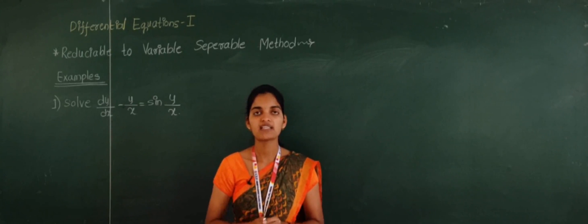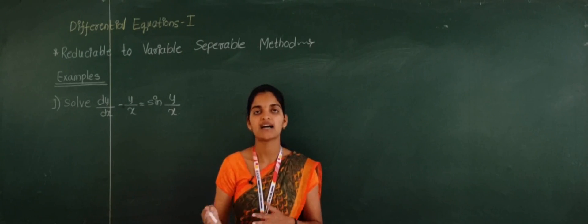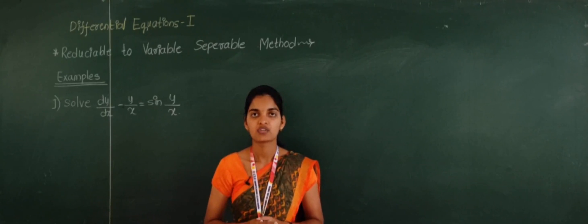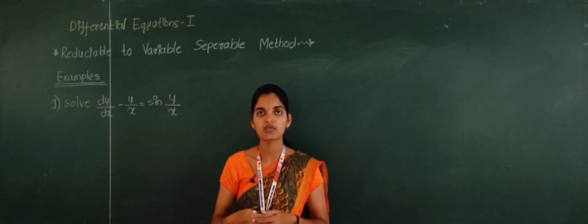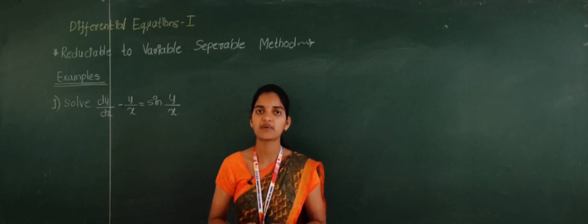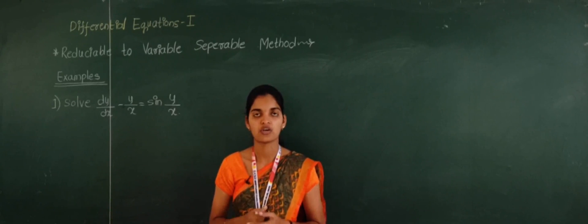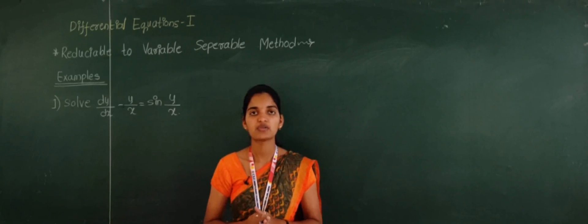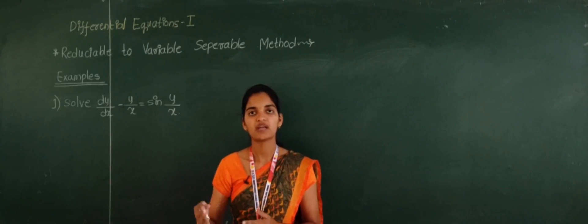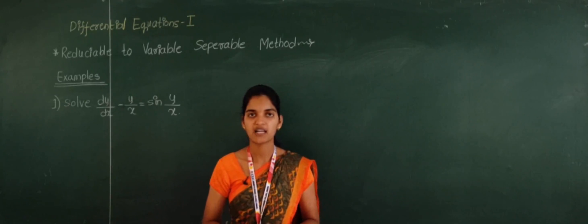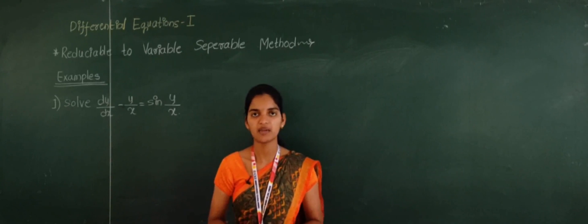This method is applicable where we cannot separate the variables directly. To separate these variables, we will reduce the equation, then separate the variables, and we will get the solution. So, what is this reducible to variable separable method? It is used where we can separate the variables and apply the method.